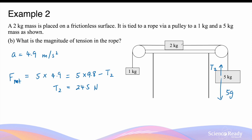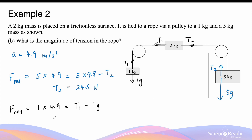Remember that the tension in the right rope is different from the tension in the left rope. So we use the acceleration and force equation for the 1kg mass to calculate T1. For the 1kg mass: 1 × 4.9 = T1 − 1g. This means T1 = 1g + 4.9, giving a tension value of 14.7 Newtons. This concludes the video on multiple masses in a system.